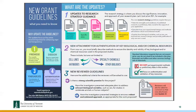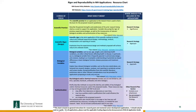Since January 2016, every NIH grant must follow new guidelines. One I want to highlight is the requirement for rigorous experimental design for robust and unbiased results, plus a new attachment for authentication of key biological resources. You now need to provide authentication of your cell lines and the specificity of antibodies. NIH has a resource chart you can download that tells you which reagents need to be authenticated and how.